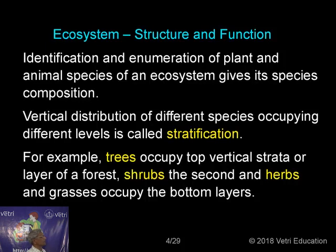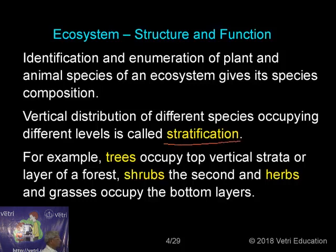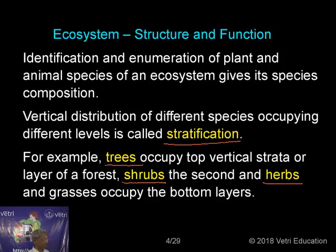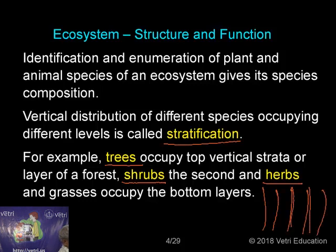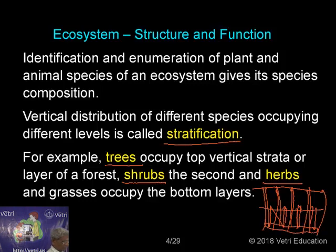Identification and enumeration of plant and animal species of an ecosystem gives its species composition. Vertical distribution of different species occupying different levels is called stratification. For example, trees occupy the top vertical strata in a forest, shrubs form the second strata, and herbs occupy the third strata at the lower level — forming three clear strata.